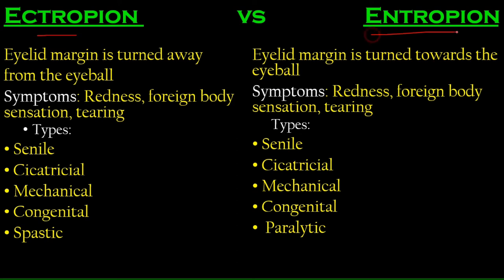So we've got ectropion and entropion. Ectropion — from the word 'ecto' which denotes towards the outside — compare that to 'entro' which means towards the inside. In ectropion, the eyelid margin is turned away from the eyeball, while in entropion it flips towards the inside.